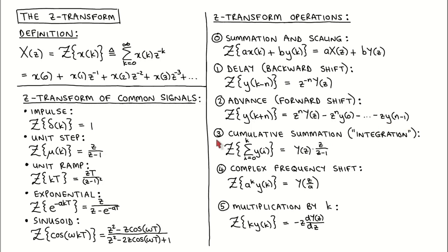For property 3, we apply the Z-Transform to a signal formed as the cumulative sum of another signal Y. At each time step K, the signal is the sum of the first K values of signal Y — we can think of this as the discrete time integration of signal Y. The Z-Transform of this is the Z-Transform of Y times Z divided by Z minus 1. Property 4 says that the Z-Transform of constant A to the power of time index K times signal Y is the Z-Transform of Y with Z replaced by Z divided by A. Property 5 says that the Z-Transform of time index K times signal Y is equal to minus Z times the derivative of the Z-Transform of Y with respect to Z.